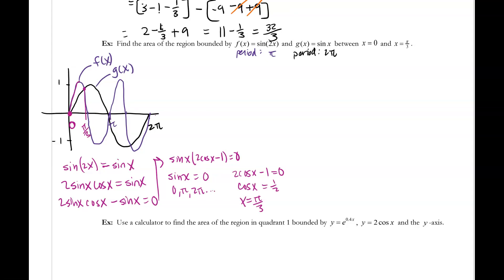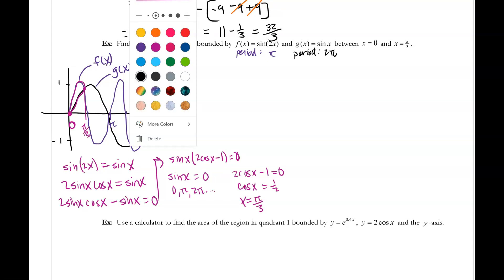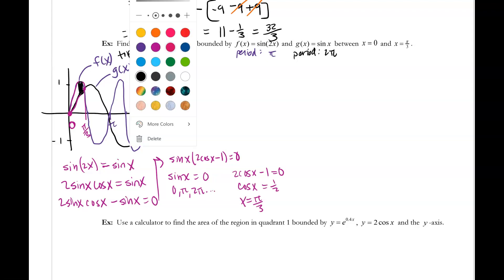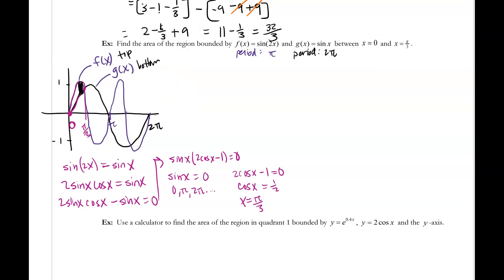Now we can see the specific region bounded by the two curves. Drawing in the sample rectangle — again these are dx rectangles — tells us that the top curve is f of x and the bottom curve is g of x in that region. So the area from 0 to pi over 3 is the integral of the top, sine of 2x, minus the bottom, sine of x, dx. We'll need to do a u-substitution for the first part, so I'm going to break this into two separate integrals: from 0 to pi over 3, sine of 2x dx, minus from 0 to pi over 3, sine of x dx.